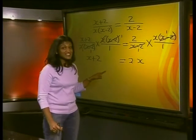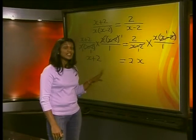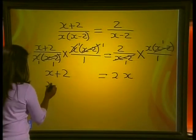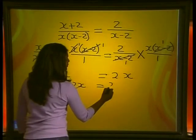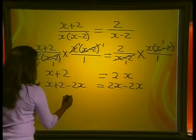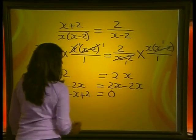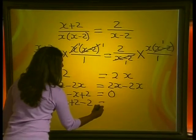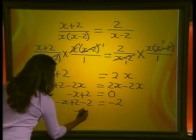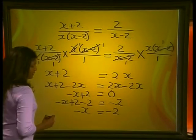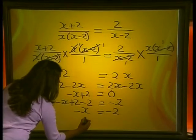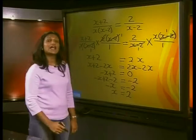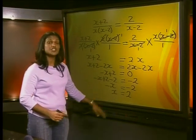Although it contained x squared initially, we now have a simple linear equation. Subtracting 2x from both sides: x plus 2 minus 2x equals 0, giving minus x plus 2 equals 0. Subtracting 2 from both sides: minus x equals minus 2. Dividing both sides by negative 1 gives x equals positive 2.